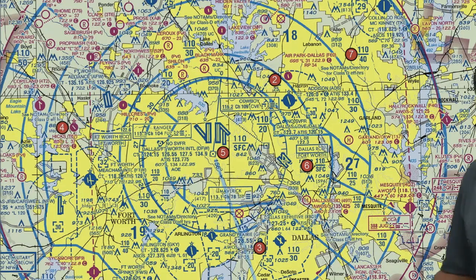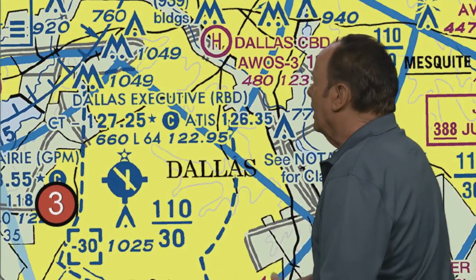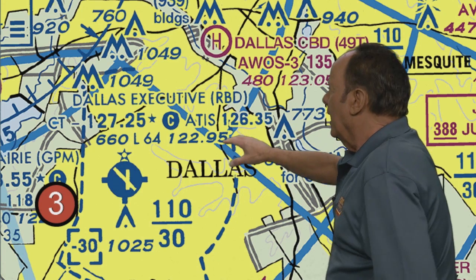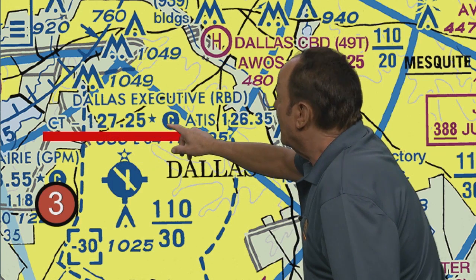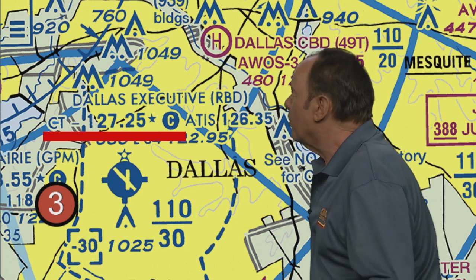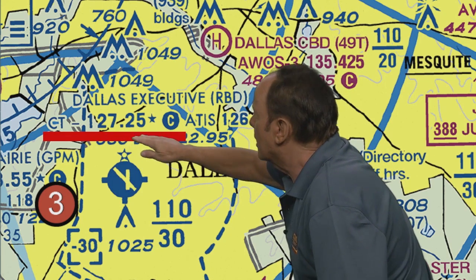Let's do one more look at common traffic advisory frequencies. Let's take a look at the Dallas area chart, Area 3 — probably the most complicated sectional chart in the United States. Here we have Dallas Executive Airport. The CT tells you this is the control tower frequency 127.25. The asterisk tells you the operation of the control tower is not continuous — it probably shuts down at nighttime. This little circle with C tells you that is also the common traffic advisory frequency when the control tower is not in operation. The message from all of this: if you're taking off or landing at an airport and your airplane has a radio in it, the FAA wants you to use that radio. 'Montgomery traffic, 49er 22 Delta on short final, full stop, Montgomery.'